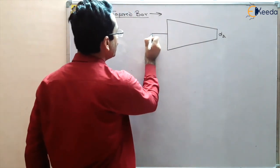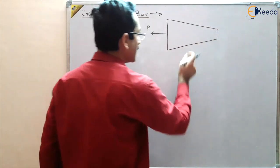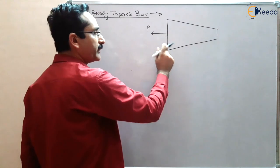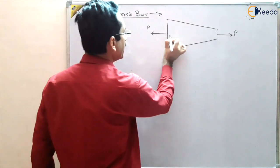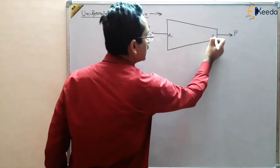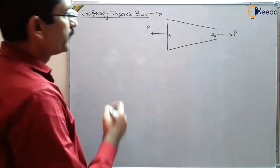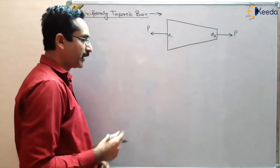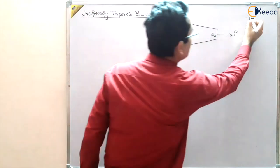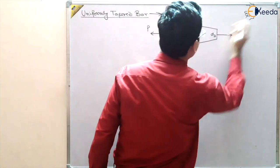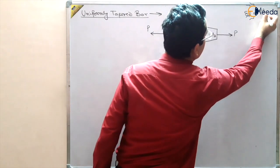The force applied is P, and for static equilibrium the same force P must be applied at both ends so that the body is in static equilibrium. The diameter at one end is D1 and at the other end is D2. The formula for deformation is δL = PL / AE.